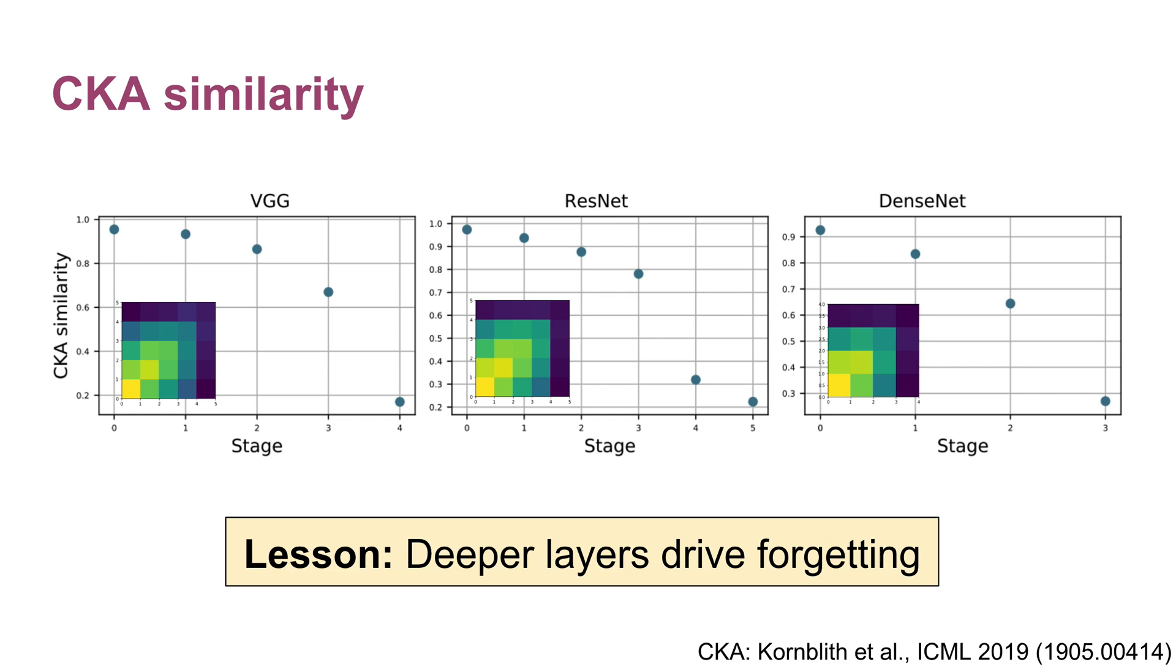The first thing we're going to do to probe how internal representations are changing is to use CKA, a method for comparing network representations. We compare representations of the task one dataset by each stage of the network before and after forgetting occurs. Higher stage numbers indicate stages closer to the output of the network.